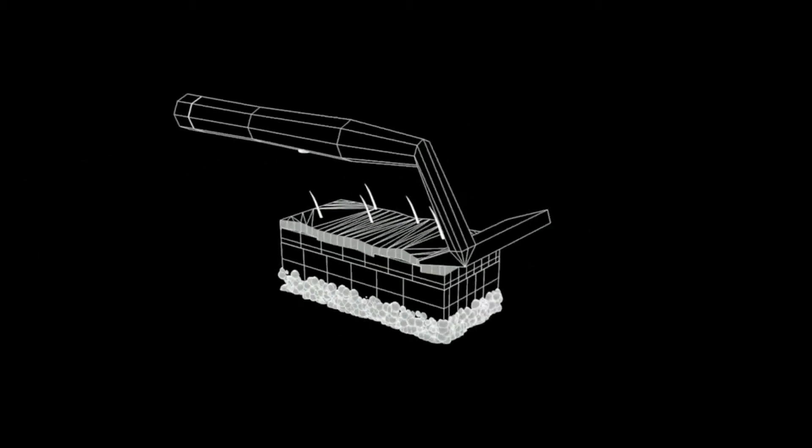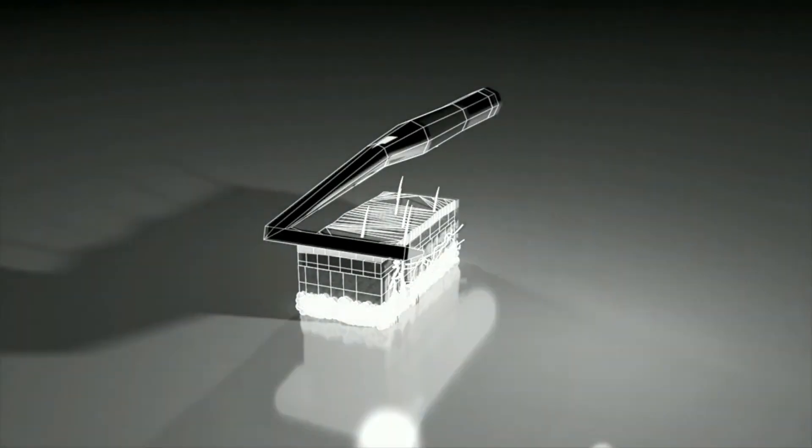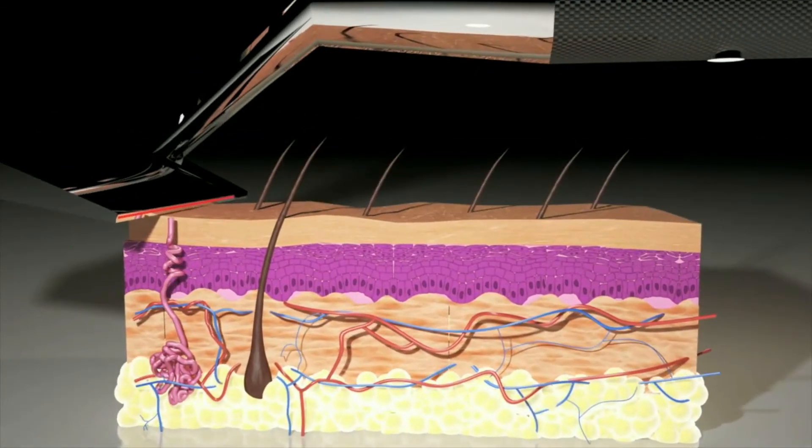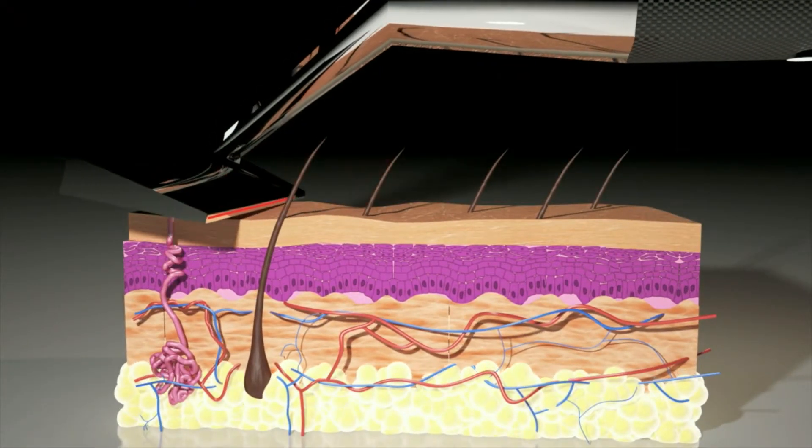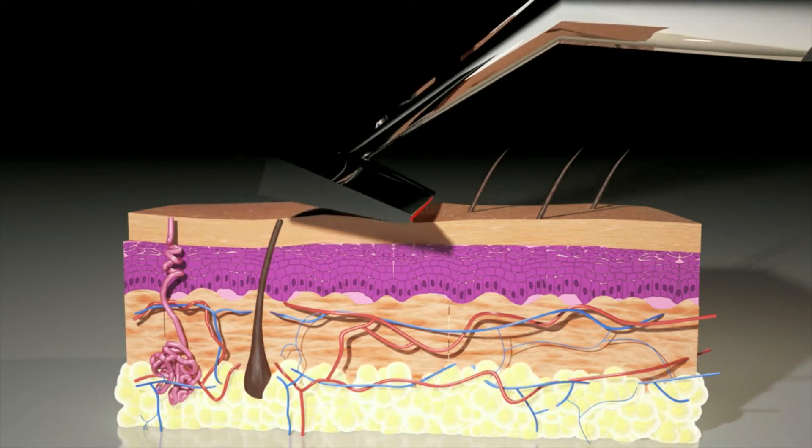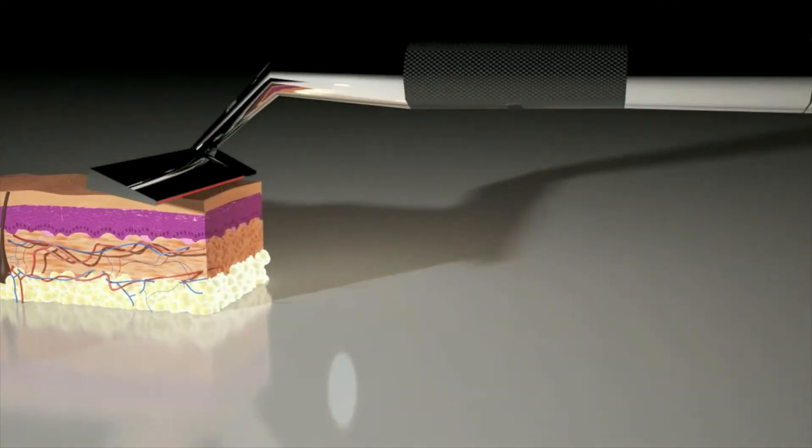A traditional razor cuts the hair shaft at an angle. This is what causes your skin to feel rough. When the SCARP razor makes contact, the laser melts through the hair shaft completely level to the surface of the skin. This leaves a smoother, softer finish that lasts longer to the touch.